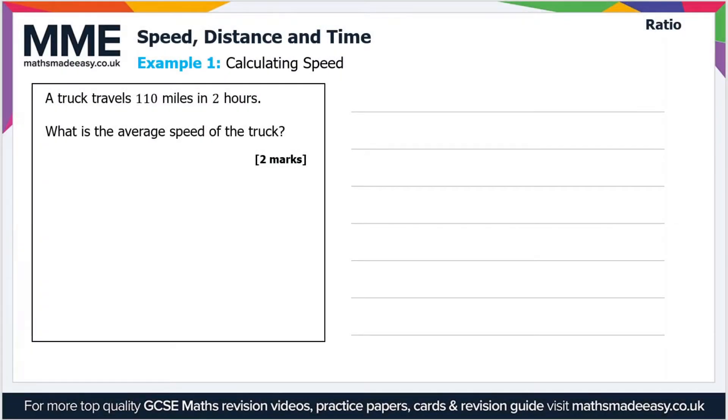So in this first example, we're looking at calculating the speed. So a truck travels 110 miles in two hours, what is the average speed of the truck? Let's draw our triangle out again, so speed equals distance divided by time.